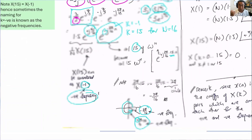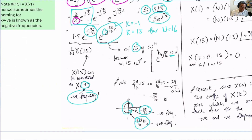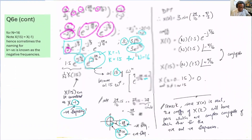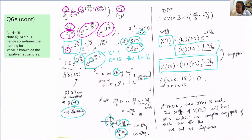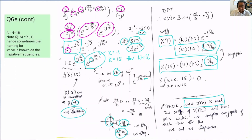In the DFT there is no index -1, so we use column 15. We substitute to find X[15] = N × 1.5·e^(+jπ/6). Comparing X[1] = N·1.5·e^(-jπ/6) and X[15] = N·1.5·e^(+jπ/6), they have the same magnitude and conjugate angles. The take-home message is: when x[n] is real, you always have conjugate pairs of complex exponentials so that the imaginary parts cancel and a real signal results.